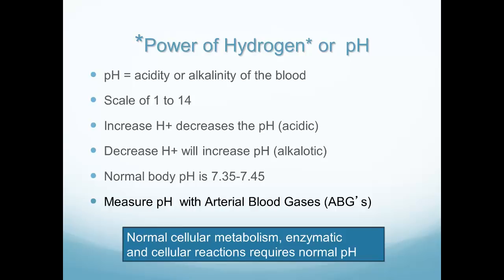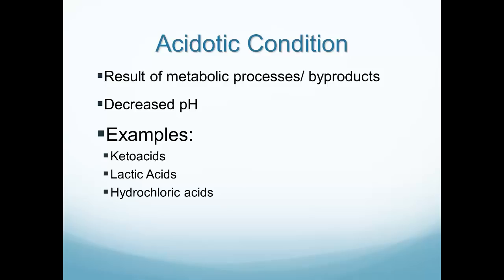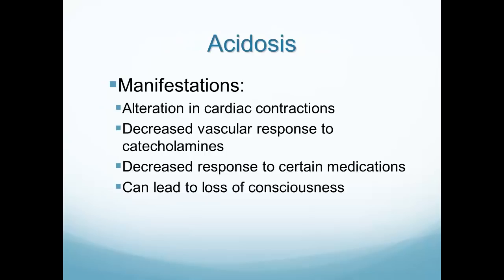We need to have a normal pH for normal functioning of all body systems — it must be in the normal range. An acidotic condition is a decrease in the pH. Examples that could cause acidosis include ketoacids, which happens in diabetic patients with ketoacidosis; lactic acids building up in the body, which occurs in shock; and hydrochloric acid from too much acid in the stomach or acid being mobilized in other ways.